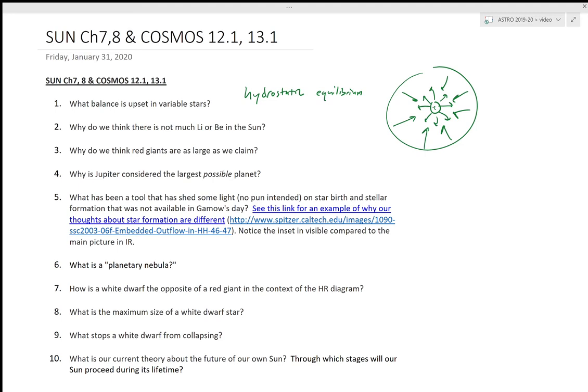Why do we think red giants are as large as we claim? This goes down to the Stefan-Boltzmann law: L is proportional to radius squared times temperature to the fourth. For a red giant, or star, let's back up.